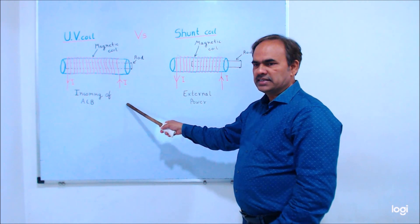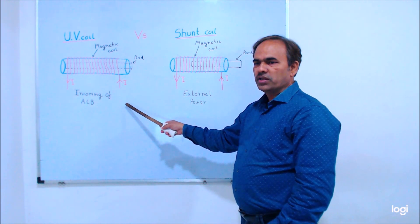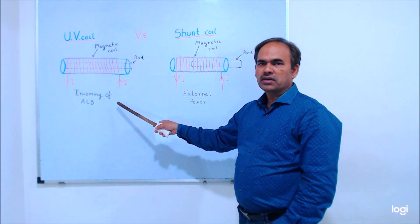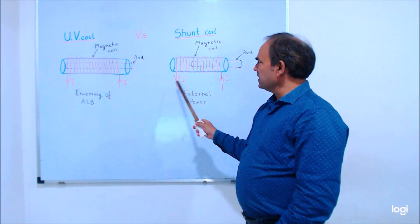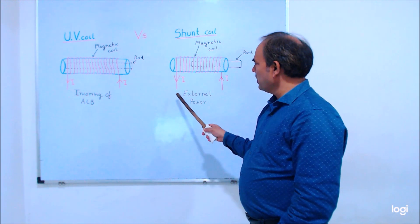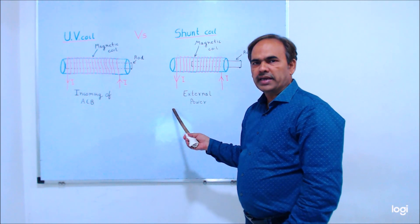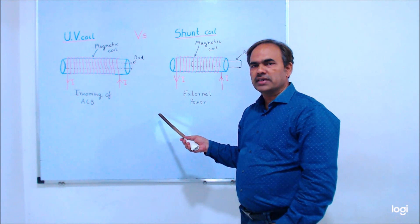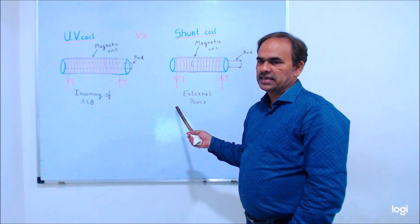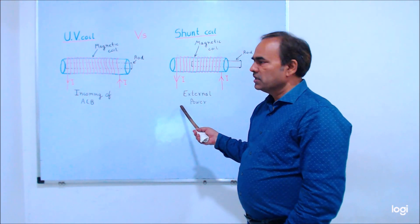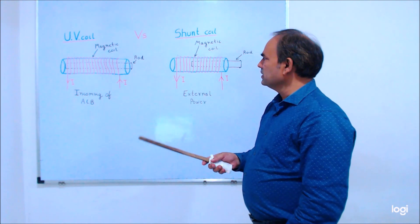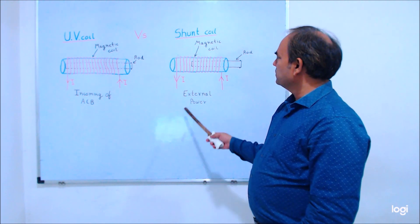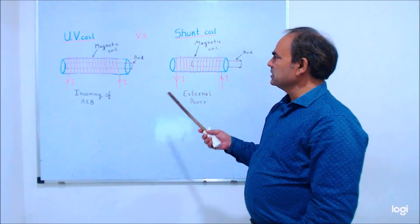The coil supply voltages available are: 24V DC, 48V DC, 110V DC, and in AC also — 220V AC and 415V AC. So both UV coil and shunt coil are available in these voltage options.